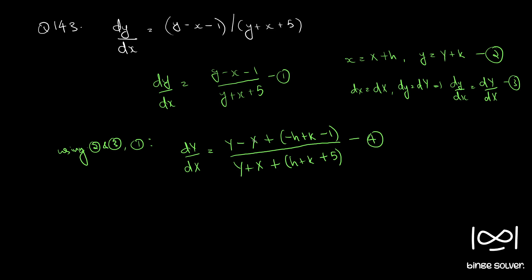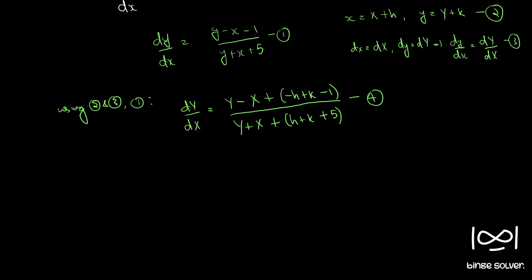But if we choose h and k such that (minus h plus k minus 1) is equal to 0, and (h plus k plus 5) is also equal to 0, then equation 4 reduces to a homogeneous form. So we will choose h and k satisfying those conditions.